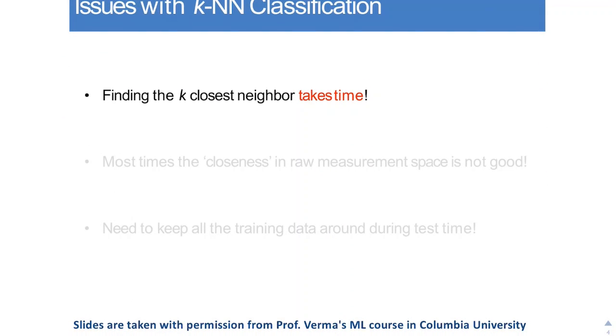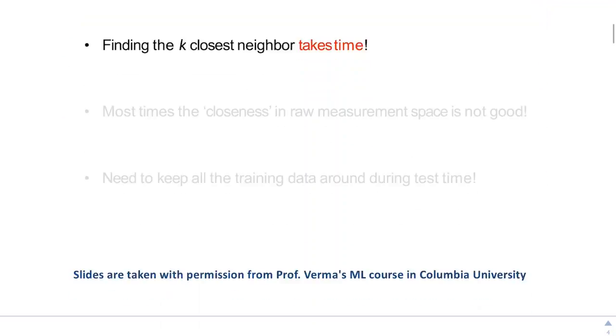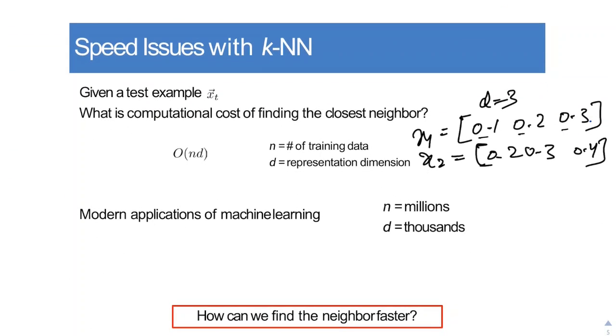So some of you might have noticed that finding the K closest nearest neighbors takes time. How much time do we need? We need time in the order of N cross D, where N is the number of training data and D is the dimensionality of the data.